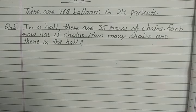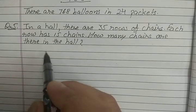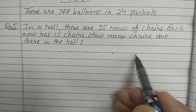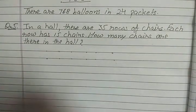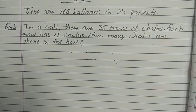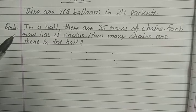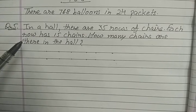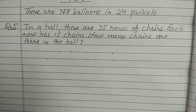Each row has 15 chairs. Total 35 rows — suppose these are lines, and in each line there are 15 chairs. Har ek row mein 15 chairs hain. Aur total 35 lines hain. The question is how many chairs are there in a hall? Poore hall mein kitni chairs hain — that you have to find out. Again, chairs in one row are given, and the total number of rows is given.